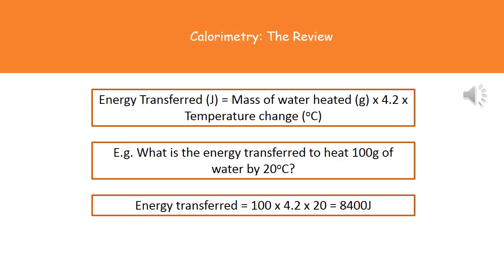I've given you an example here of the kind of thing that you might be asked and the question there is what is the energy transferred to heat 100 grams of water by 20 degrees C? So all we do is we put those numbers into our calculation which we find on page two and the answer there would be 100 times by 4.2 times by 20 and that gives us our answer of 8400 joules.